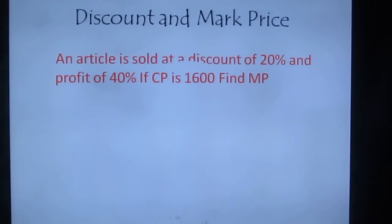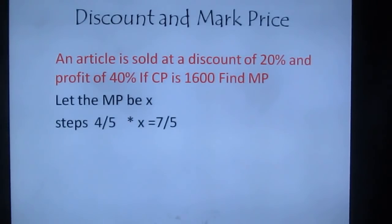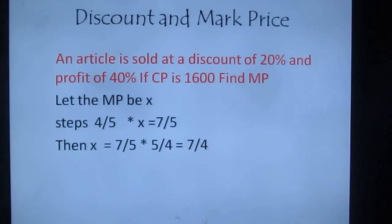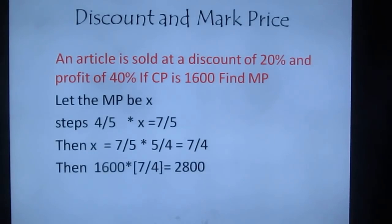Fourth question: an article is sold at a discount of 20% and a profit of 40%. CP = 1600. Find MP. Let MP = x. Discount of 20% = 1/5, so factor = 4/5. Profit of 40% = 2/5, so SP factor = 7/5. Equation: (4/5)x = (7/5) × CP. Solving: x = (7/5) × (5/4) × 1600 = (7/4) × 1600 = 2800.